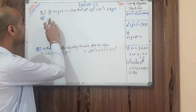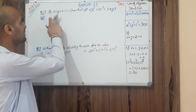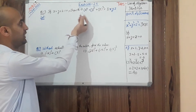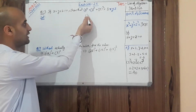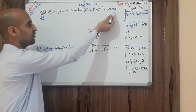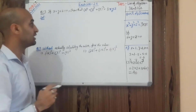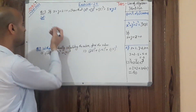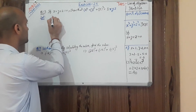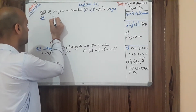Today's topic is question number 13: If x + y + z = 0, prove that x³ + y³ + z³ = 3xyz. This is the first task. Let's start — first we need to write what is given to us.